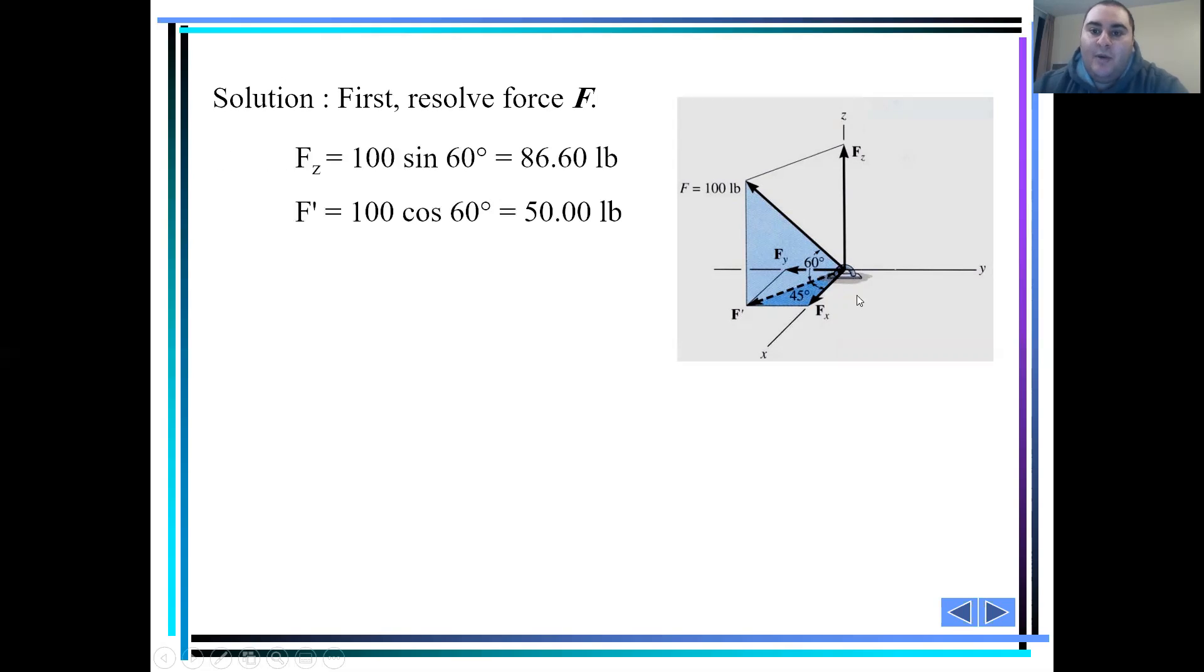Basically, Fz is going to be 100 times sine 60 degrees, and our f-hat is going to be 100 times cosine 60 degrees. But that's not all. The second step is we have to break down the f-hat into the xy components.